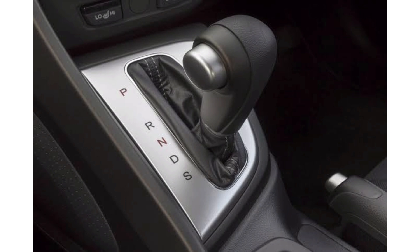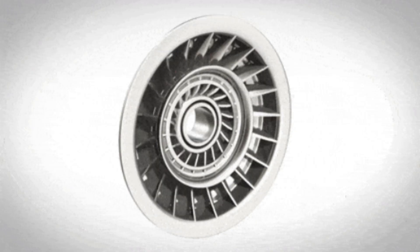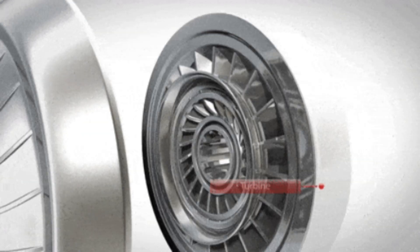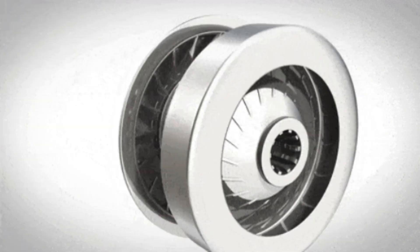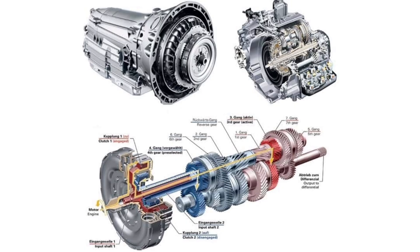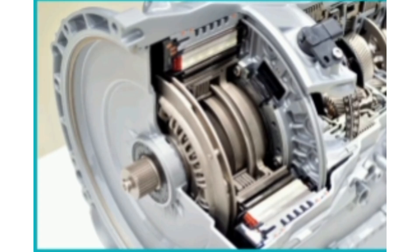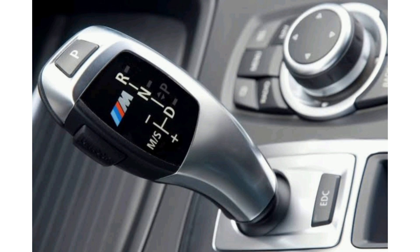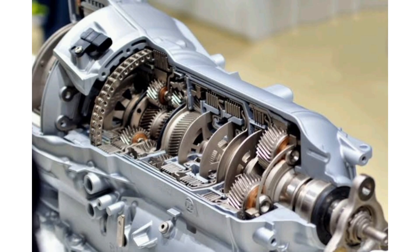Automatic transmission is a user-friendly alternative to manual transmission. It eliminates the need for manual shifting of gears, making driving more convenient, especially in heavy traffic. An automatic transmission system uses a torque converter to regulate the power flow between the engine and the wheels. The transmission's hydraulic system automatically selects and engages the appropriate gear based on driving conditions, engine speed, and vehicle load, allowing for smooth and effortless gear changes.